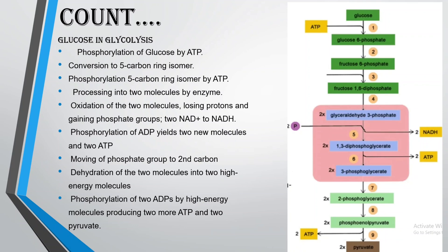Glucose and glycolysis: The process involves phosphorylation of glucose by ATP, conversion to a 5-carbon ring isomer, and phosphorylation of that isomer by ATP. The molecule is then processed into two molecules by an enzyme, which are oxidized — losing protons and gaining phosphate groups — converting 2 NAD+ to 2 NADH. Phosphorylation of ADP yields two new molecules and two ATP, followed by movement of a phosphate group to the second carbon.